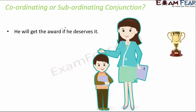In this case, the conjunction is 'if' because it is connecting the two clauses: 'he will get the award' and 'he deserves it.' Here, 'if' is indicating a condition — he will get the award if he deserves it. Because it shows a condition, it is a subordinating conjunction.